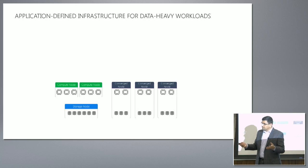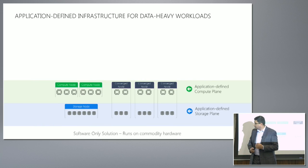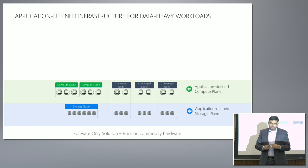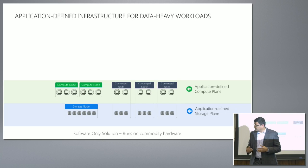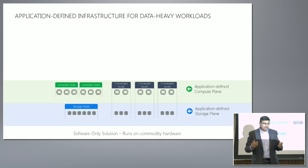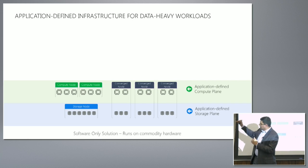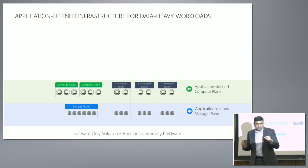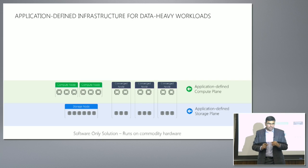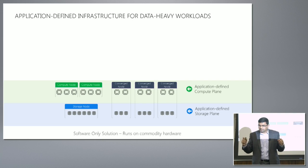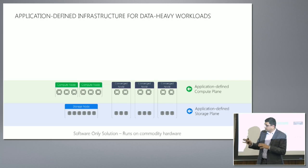You start with these nodes, install Linux — Red Hat, CentOS — and then you put Robin software on it. The moment you install it on these machines, it does device discovery, finds out the characteristics of the machine and the drives, and then creates two logical planes: an application-defined compute plane, which aggregates all compute resources across all nodes, and an application-defined storage plane, which aggregates all the storage available on these nodes.